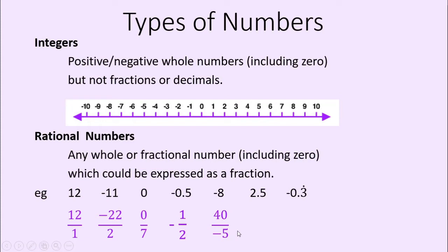Next, 2.5 — we could write that as 5 divided by 2, which gives us 2.5. And negative 0.3 recurring — I would actually prefer to write this as a fraction, because other than writing a dot on top of the 3 to show that it's recurring, I can't write this decimal correctly. Negative 0.3 recurring is the same thing as negative 1 third. Try it on your calculator if you don't believe me.